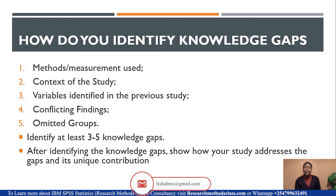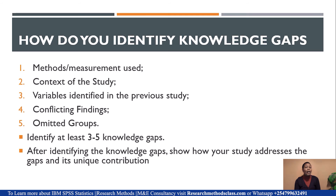How do you identify the knowledge gap? You identify it by looking at the methods that the person you reviewed has used versus what you want to use. For instance, a person may have used only a survey in their study, but you want to use a mixed method. That is a knowledge gap — but you don't leave it at just stating that the current study will use mixed method. You need to give the reason why mixed method would be better than the survey used in the material you referred to.